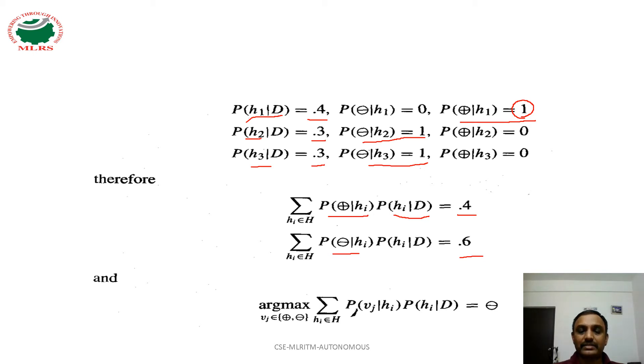That one we are getting 1 into 0.3 plus 1 into 0.3 equals 0.6. By taking argmax, where Vj is a subset of capital V, which is the set of positive and negative possible target outputs,